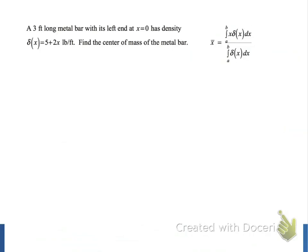First, we'll draw a graph of the density function. The bar is 3 feet long. When x equals 0, the density is 5 pounds per foot. When x equals 3, the density is 5 plus 2 times 3, which is 11 pounds per foot. So we can put that on the graph.